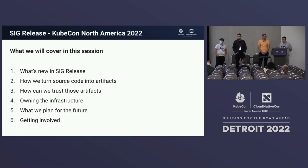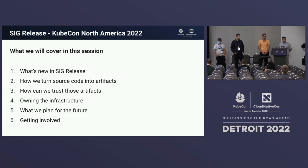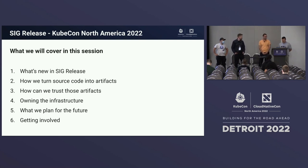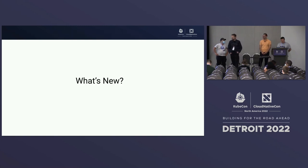We'll talk about what's new and what we will do in the next couple of months. After that, we'll speak about how we turn source code into artifacts — how we actually build the release and which user personas are involved. Then we'll speak about how we can trust those artifacts and how end users can verify that trust. We'll also cover community-owned infrastructure and our plans for the future, and finally how to get involved in SIG Release.